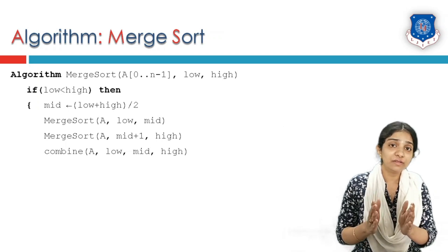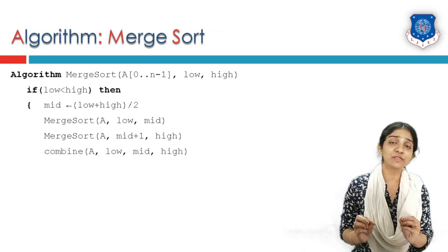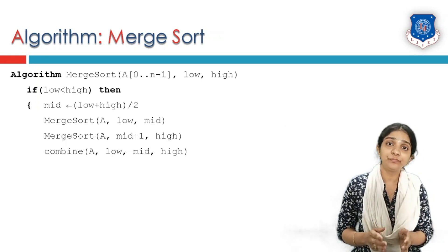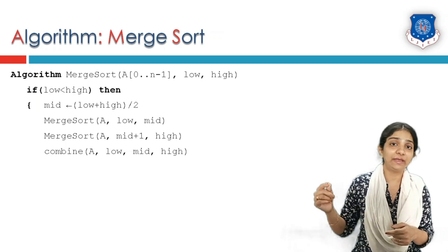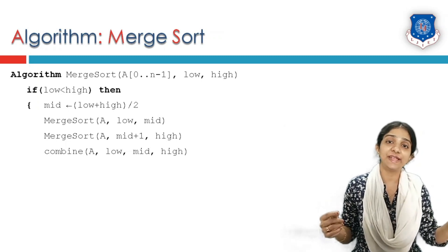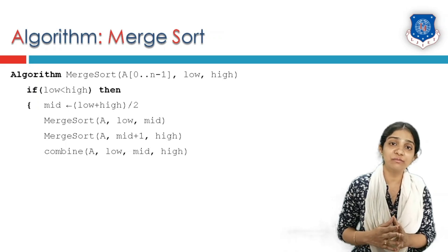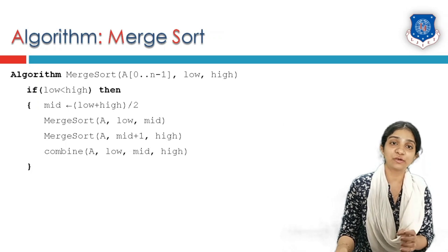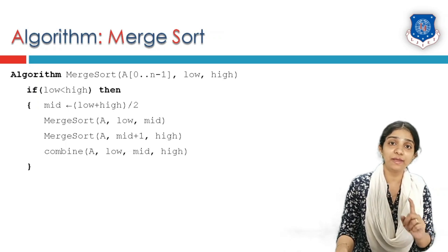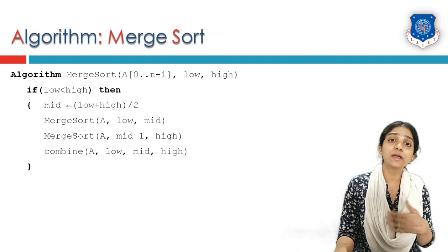The next step is to combine these two sublists. To do so, we make a call to the combine algorithm, which takes input array A as well as three indices: low, mid, and high. The merge sort algorithm makes recursive calls to itself twice — one for low to mid and another for mid+1 to high — and also calls the combine algorithm.